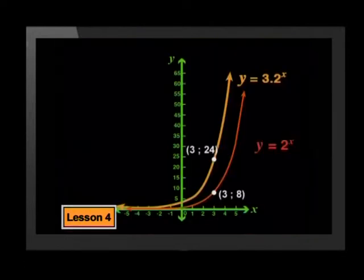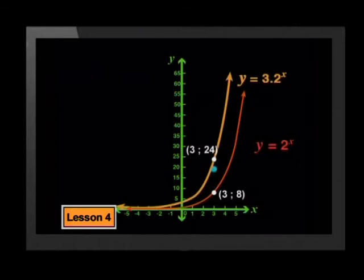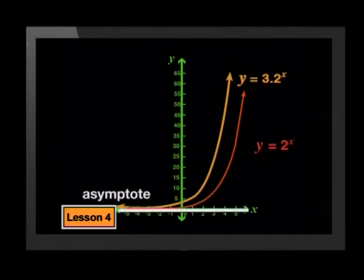For x equal to 3, there is a y-value of 8 on the parent graph and a y-value of 3 times 8, which is 24, on the new graph. So the point 3, 8 has been stretched vertically to become the point 3, 24. The asymptote has not moved — it remains at y equal to 0 for both graphs.